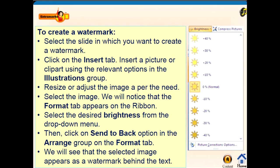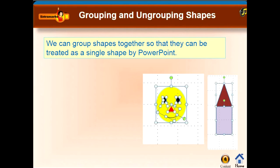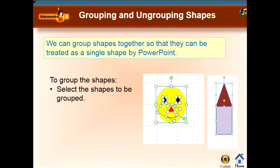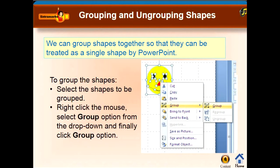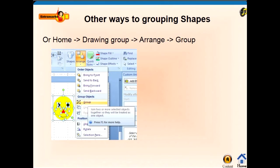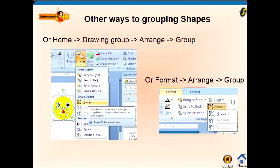Then click on the Send to Back option in the Arrange group of the Format tab. You will see that the selected image appears as a watermark behind the text. We can group or ungroup shapes. We can group shapes together so that they can be treated as a single shape by PowerPoint. To group shapes, select the shapes to be grouped, right-click the mouse, select the Group option from the drop-down menu, and click Group. Other ways to group objects are: go to Home > Drawing > Arrange > Group, or Format > Arrange > Group.